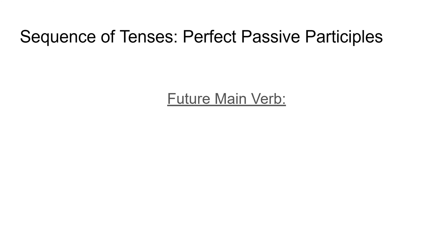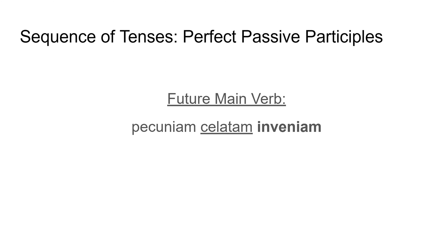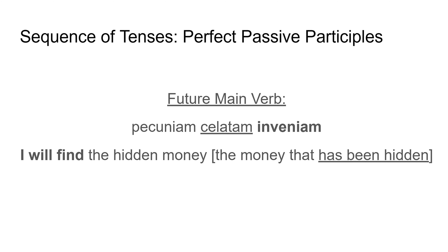If I have a future main verb, the same thing applies. I have 'pecuniam celatam inveniam'. Inveniam is future, so I need to take a step back to the present: 'I will find the hidden money', or 'I will find the money that has been hidden'. Present tense — it is hidden, it's already hidden. I have to keep that passive sense in, hence 'has been'.